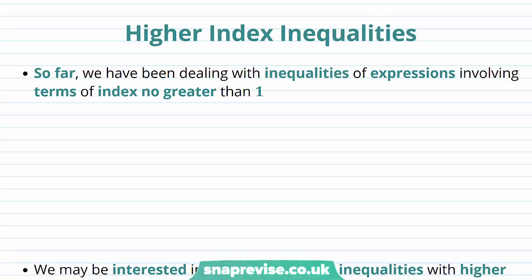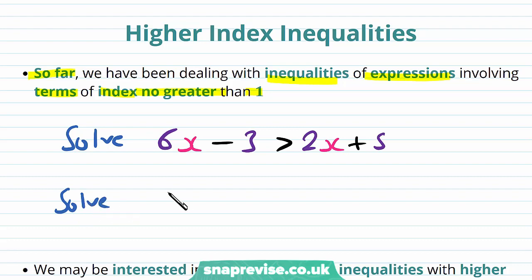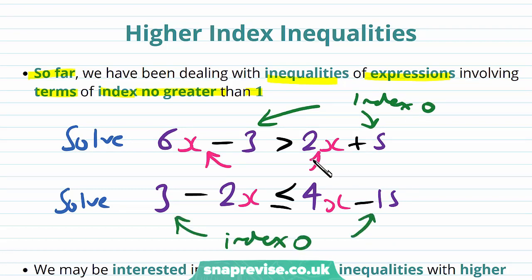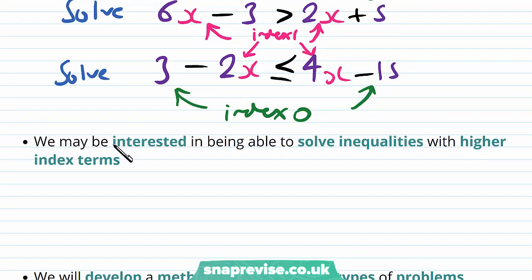So how can we solve higher index inequalities? So far, we've been dealing with inequalities of expressions involving terms of index no greater than 1. For example, maybe asked to solve the inequality 6(x-3) > 2x+5, or 3-2x ≤ 4x-15. In both of these inequalities, we have index 0 and index 1 terms, but no terms any higher. We may be interested in solving inequalities with higher index terms.